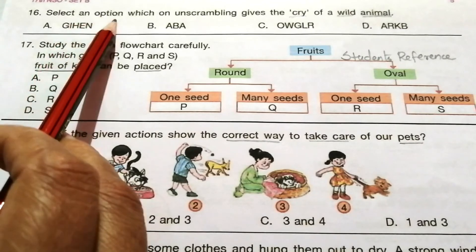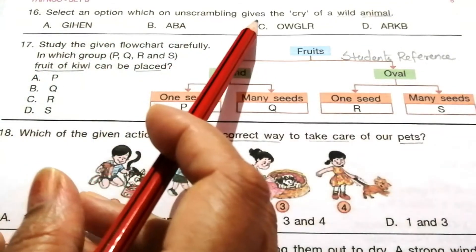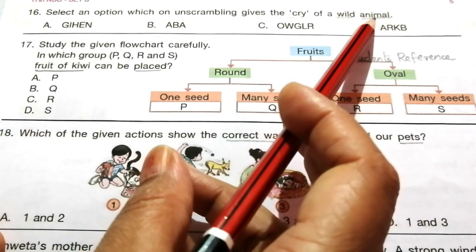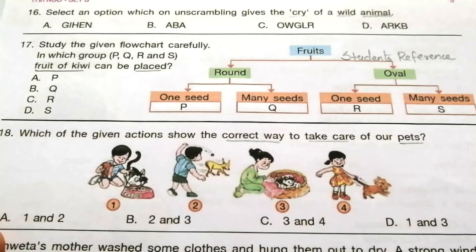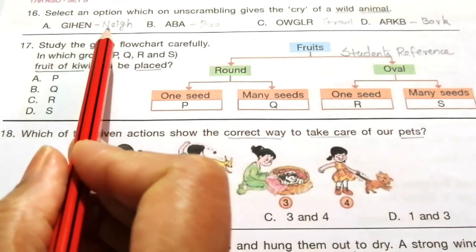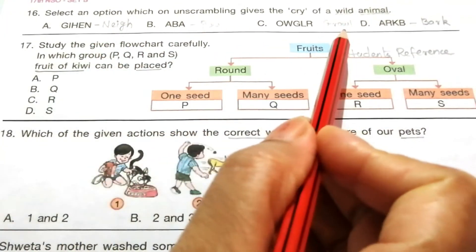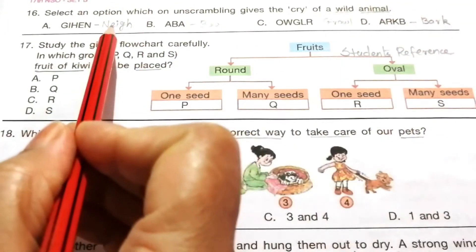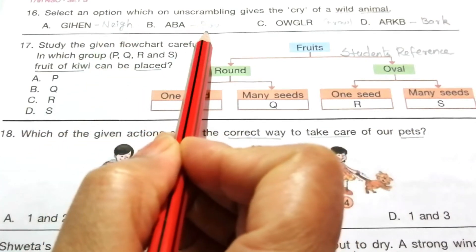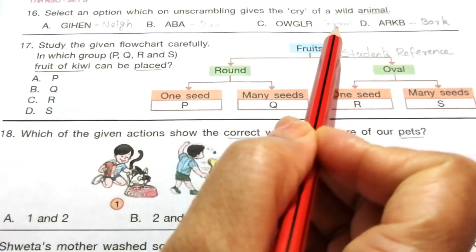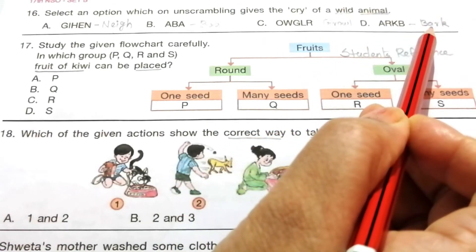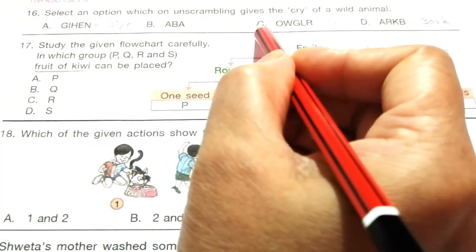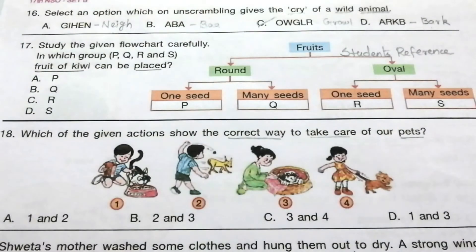Question 16: Select an option which on unscrambling gives the cry of a wild animal. Unscrambling the options gives: Neigh (cry of horse), Baa (cry of sheep), Growl (cry of tiger), Bark (cry of dog). The answer is C — Growl, because tiger is the wild animal.